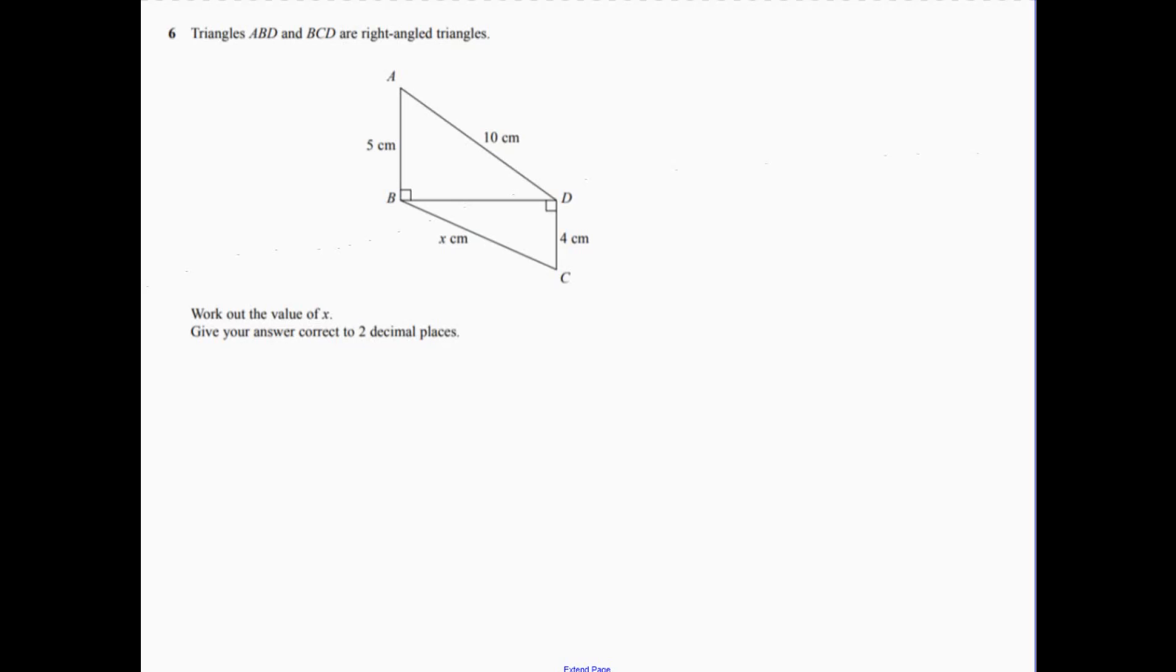Question 6. So we've got just kind of a double bit of Pythagoras here. So just looking at that triangle to begin with, it's a right-angled triangle.